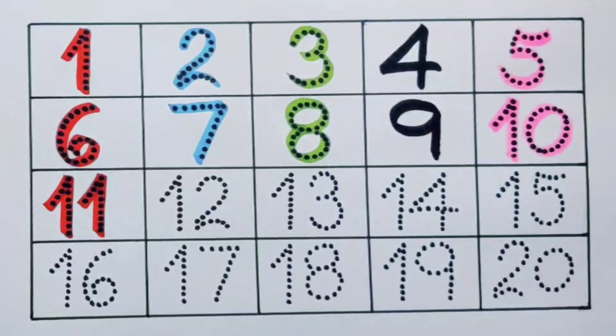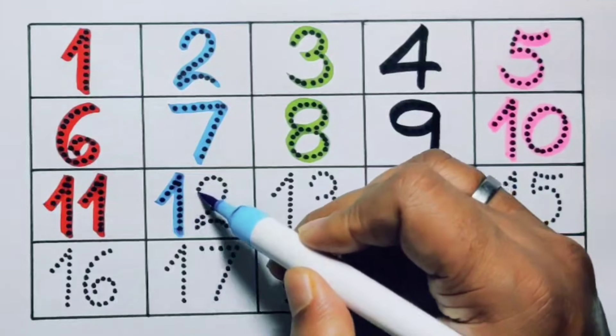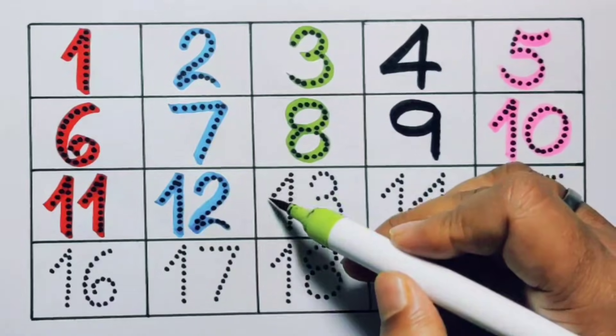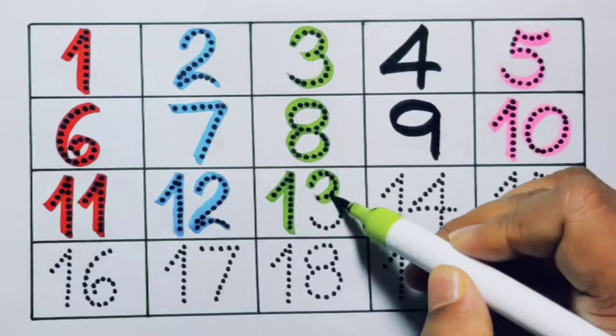Next kids, twelve, one two, twelve, number twelve. Next, thirteen, one three, thirteen, number thirteen.